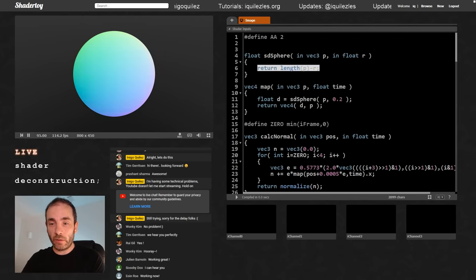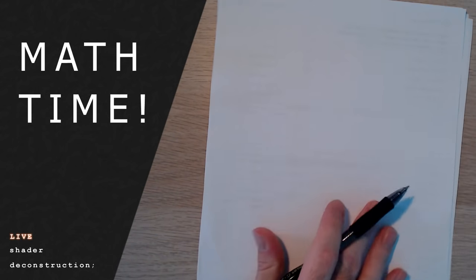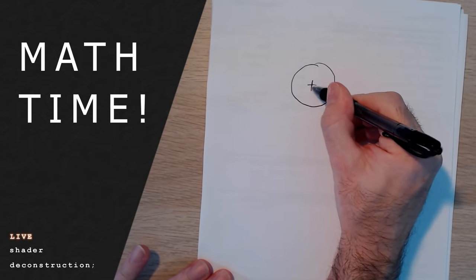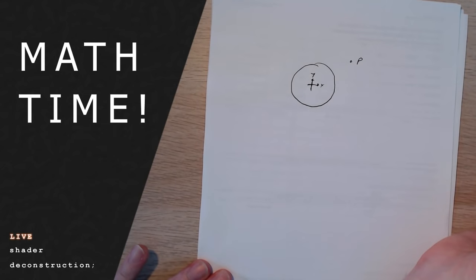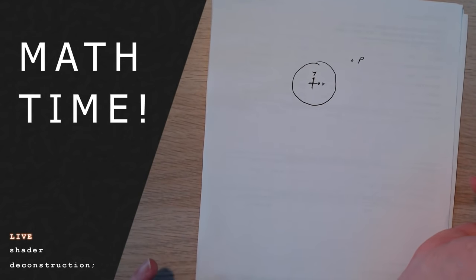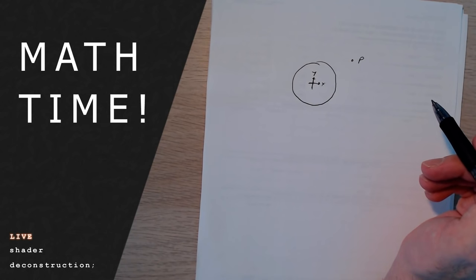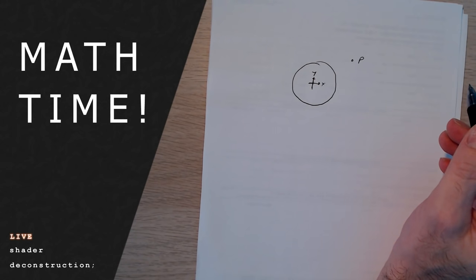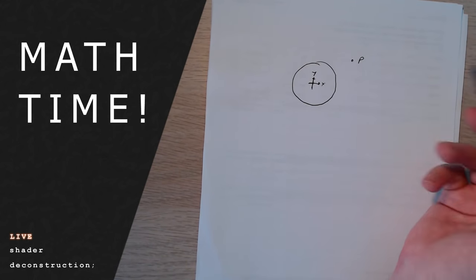Let's go through the SDF for a sphere as a basic introduction. So we have a sphere with a given center — in this case at the origin of the X-Y axis — and there's a point P in space with 3D coordinates. I'll be drawing everything in 2D; all the equations we are going to do today you can reason about in two dimensions, and by replacing Vec2s by Vec3s, everything generalizes properly to 3D space.